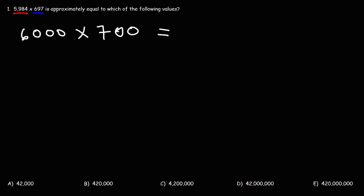Now, what is 6,000 times 700? What do you think the answer is? Well, here's a shortcut. Here's what you can do. First, multiply 6 and 7. 6 times 7 is 42. Now, what do you do next? Now, all we need to do is carry over the zeros. On the left, we have three zeros. On the right, in the second number, we have two zeros. So, our answer is going to have five zeros.